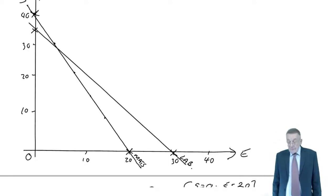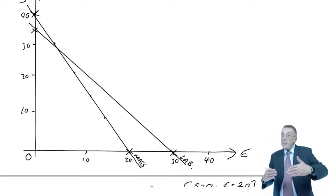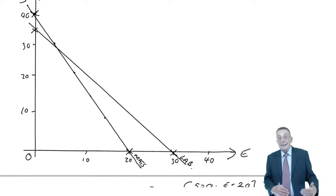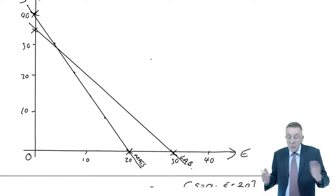And again, whatever combination of S and E we end up with, if they lie on the line, we're using exactly 180 hours. The restriction was 180 or less. So whatever answer we end up with is either on the line or it's below the line. We can't make more. It can't be anywhere up here. We're limited.